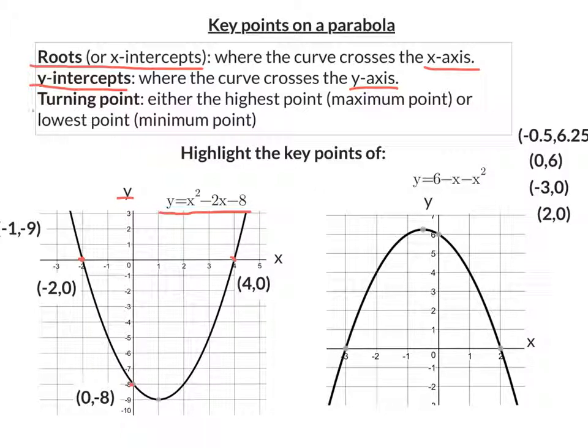The last key point to look at is the turning point. And this is either the highest point, which we call a maximum point, or the lowest point of the parabola, which we call a minimum point. So in the case of the one we've got here, we've got a minimum point there. And if we work out its coordinates, it is negative 1, negative 9.